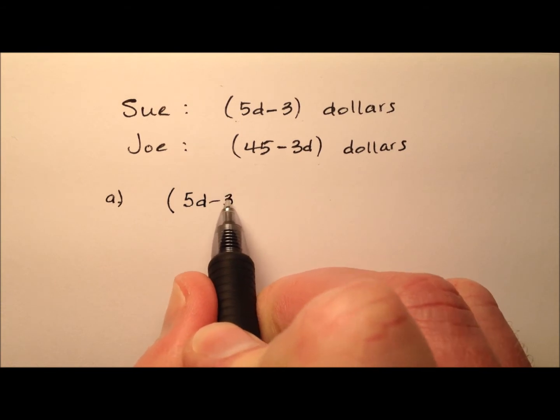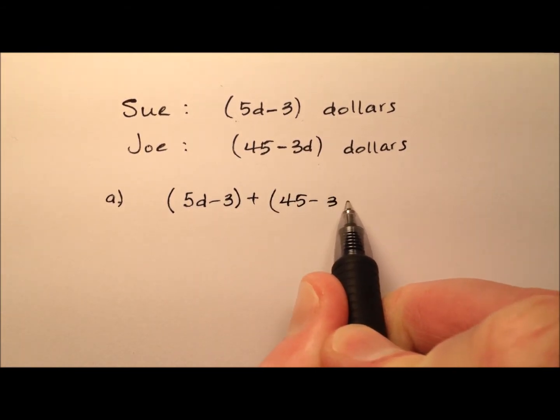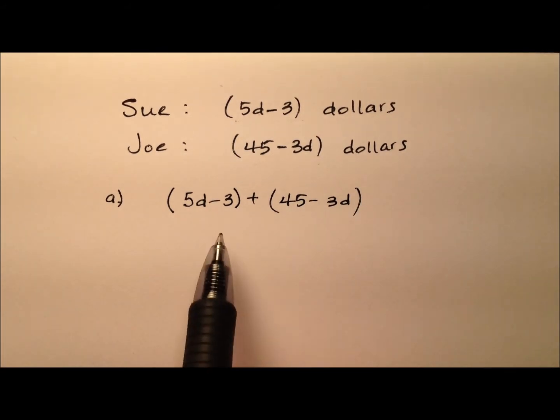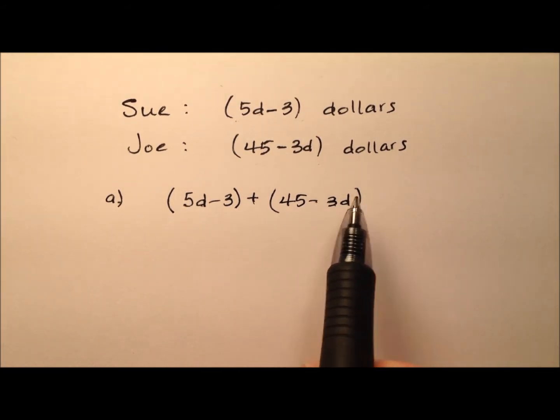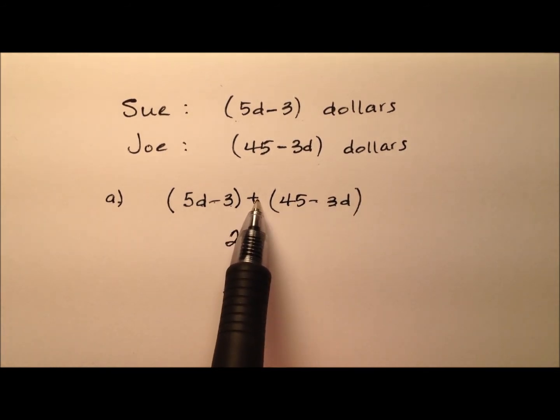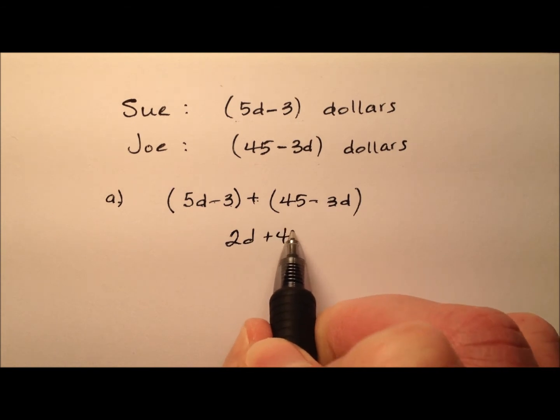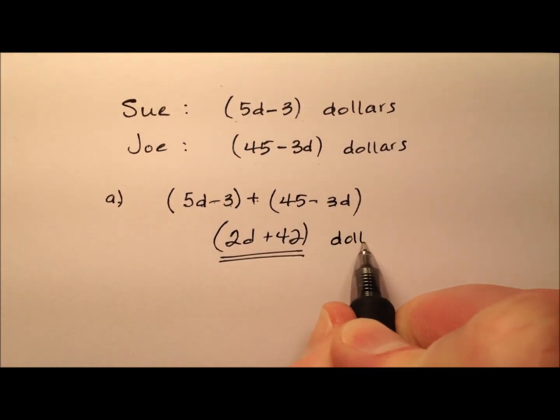Sue is 5d minus 3, and to that we're going to add 45 minus 3d. So 5d plus negative 3d is 2d, and negative 3 plus 45 is 42. So the amount of money they have together will be 2d plus 42 dollars.